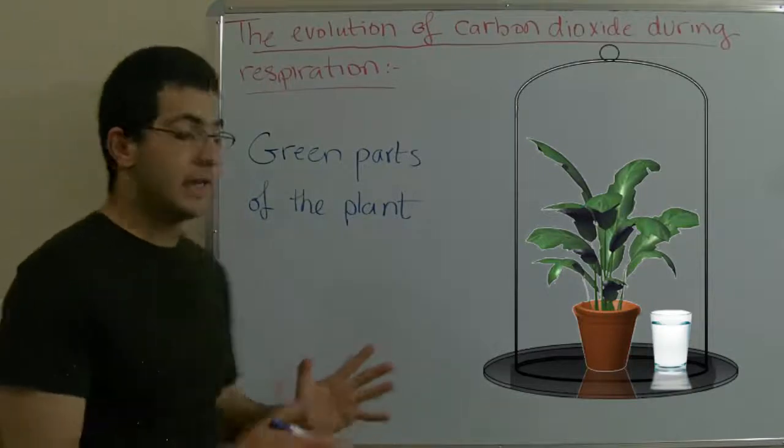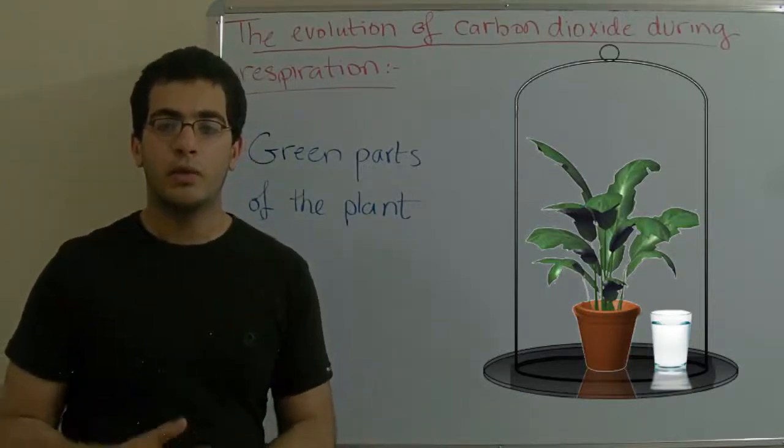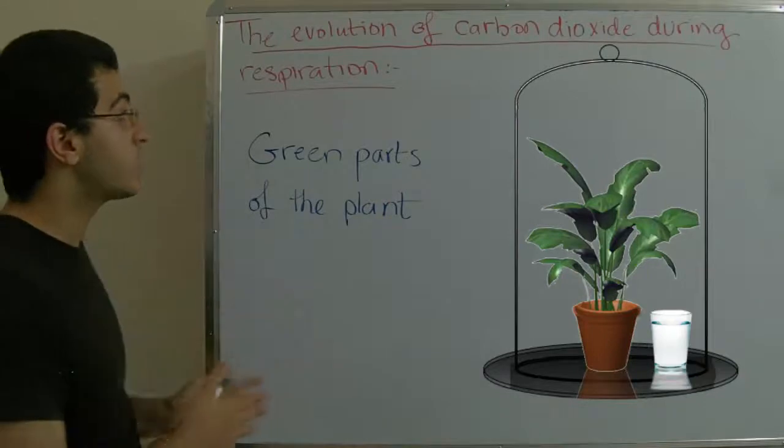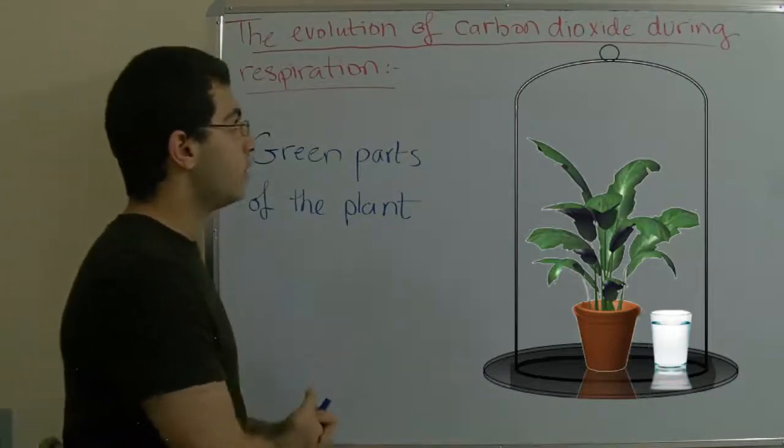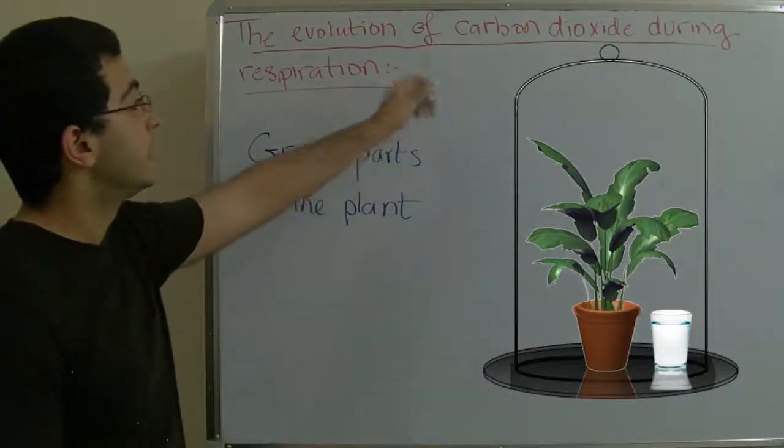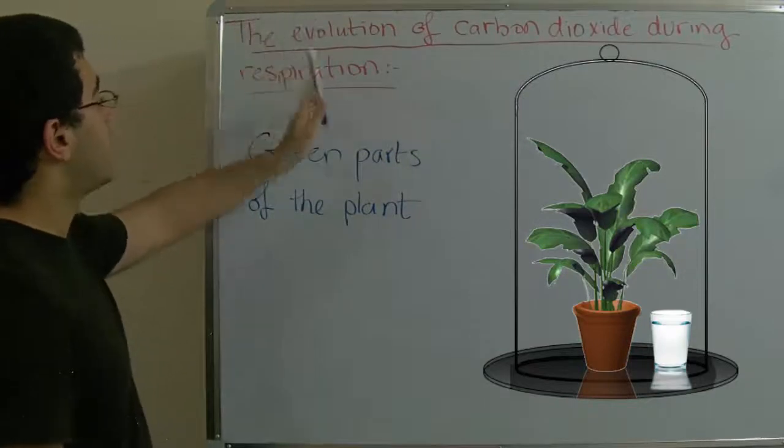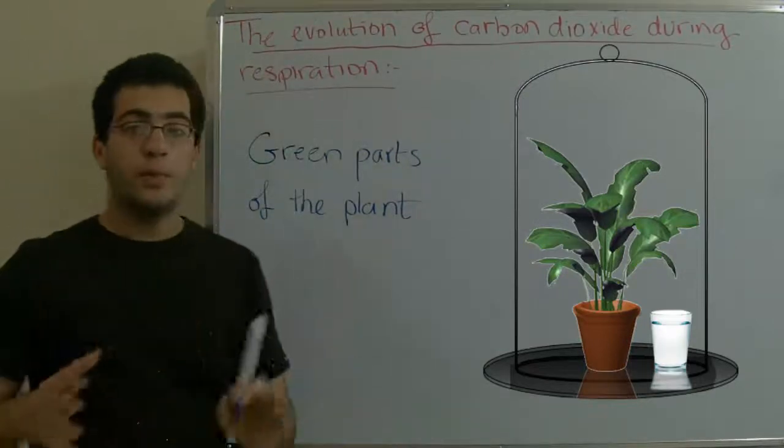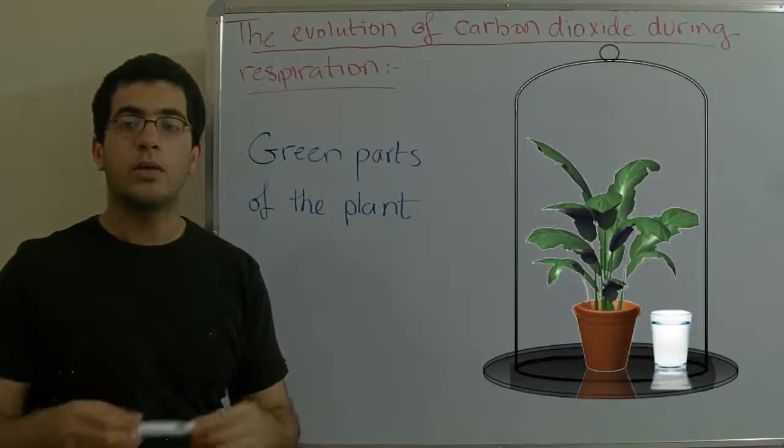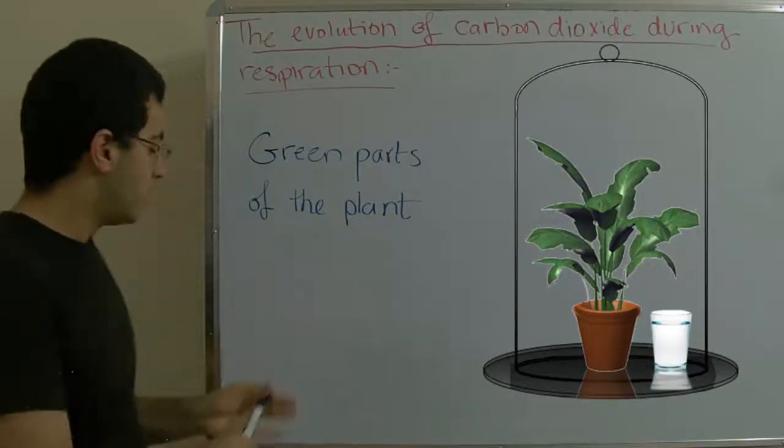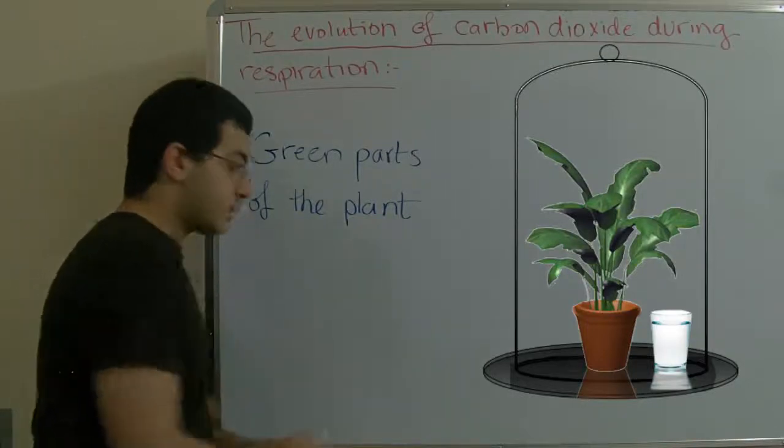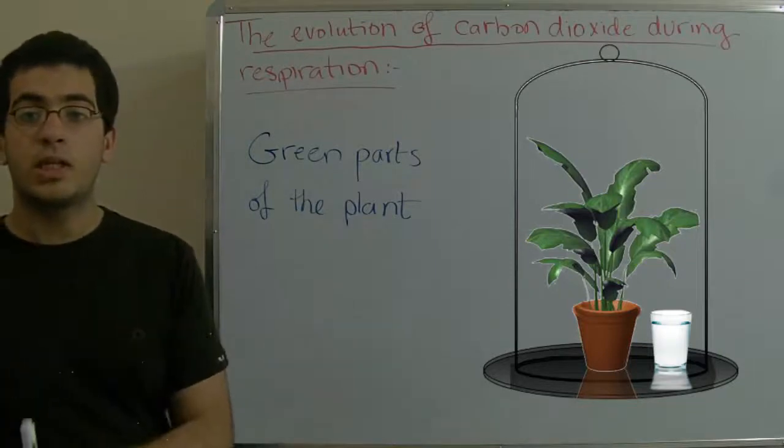We will notice that in apparatus number one, the glass with lime water becomes turbid or milky, and this proves that carbon dioxide is produced during respiration. We put the black cloth over the upside down beaker in order to ensure that sunlight doesn't reach the plant.